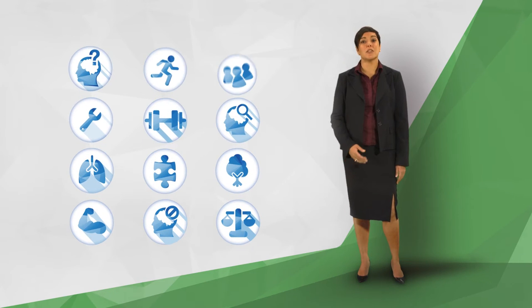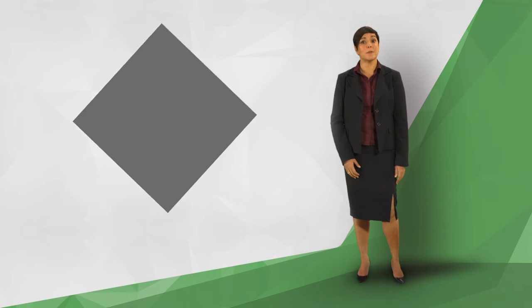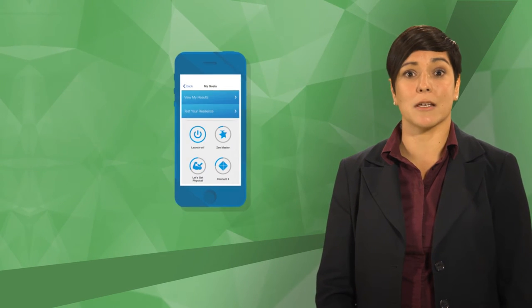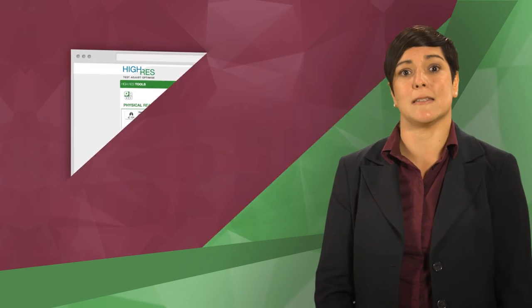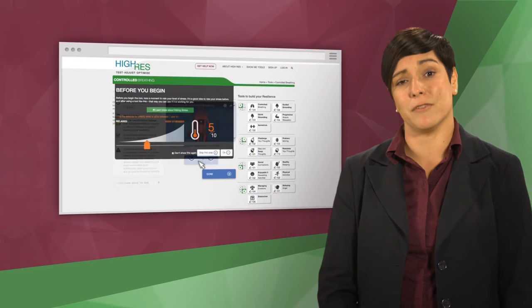There are tools within each of the four smart quadrants to help you adjust your initial reactions. The Hi-Res website and the companion app allow you to access these tools whenever and wherever you need them.